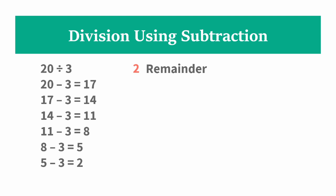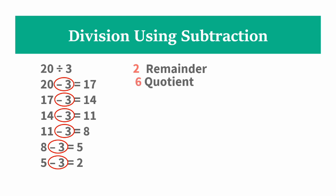Now, how do we get the quotient? The quotient is the number of times that we subtracted 3. So let's count: 1, 2, 3, 4, 5, 6. Therefore our quotient is 6.